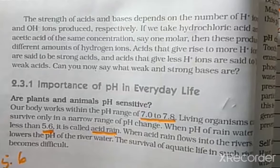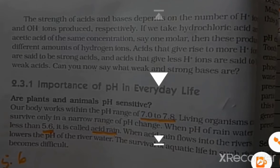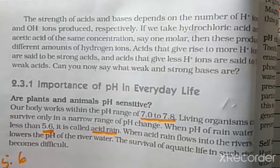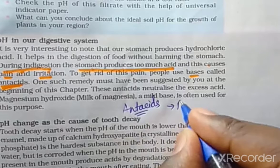Sometimes exam questions ask: what is the pH of acid rain? The answer is 5.6. Another common question is: at which pH do human beings work? That is on the basis of 7 to 7.8. Now let us look at pH in our digestive system.